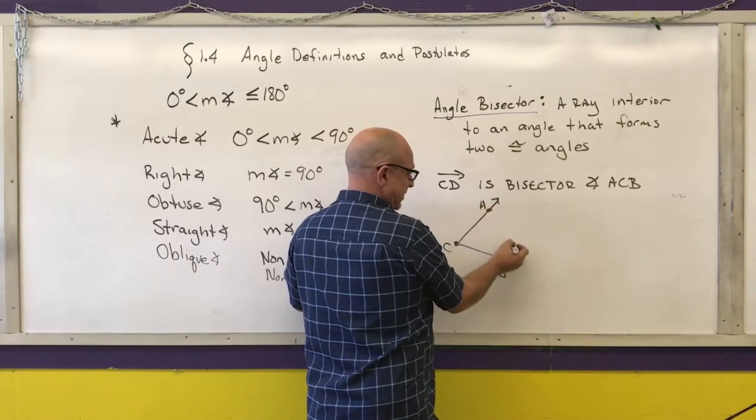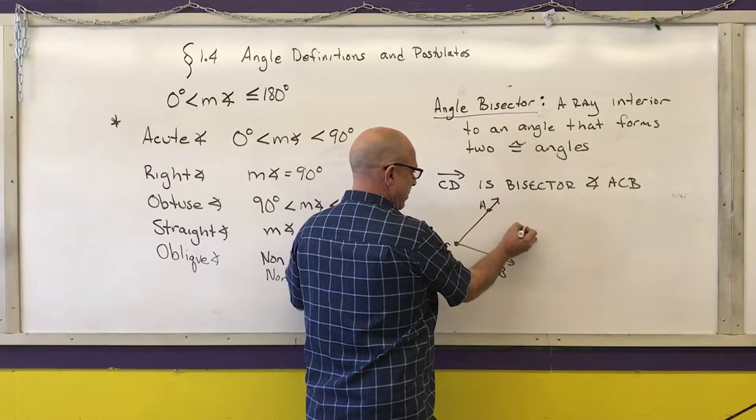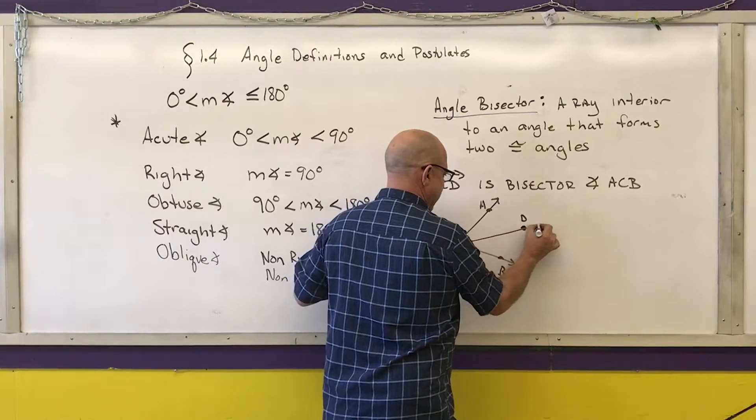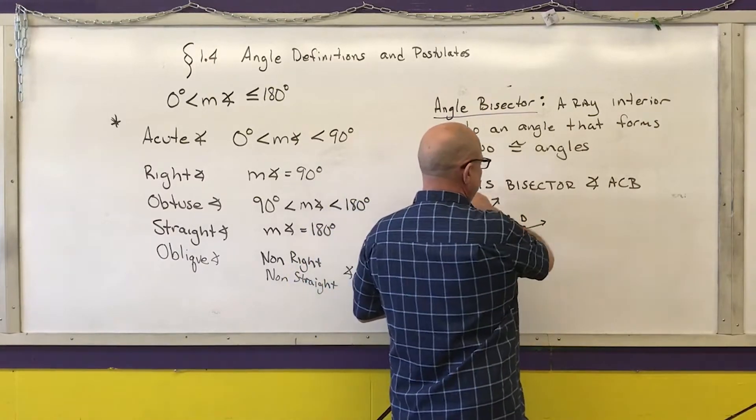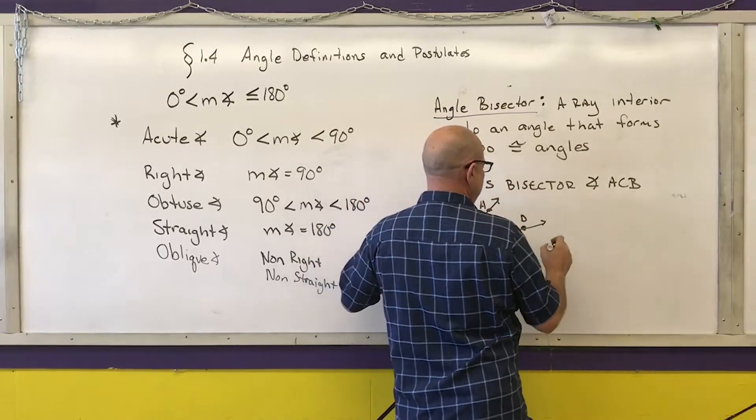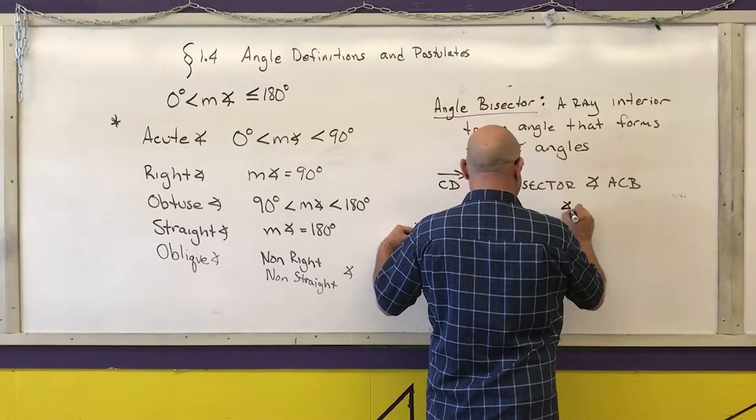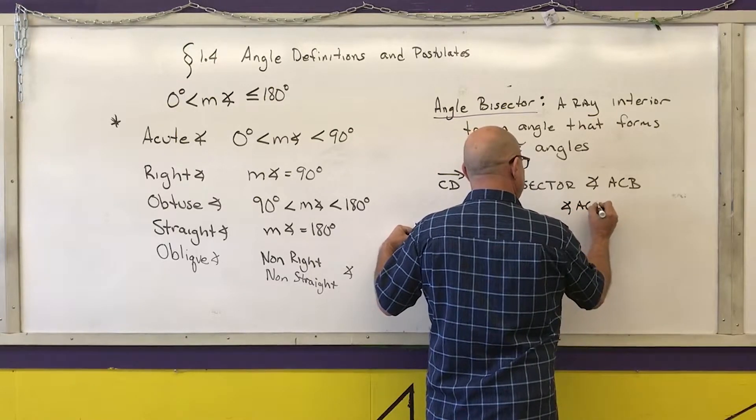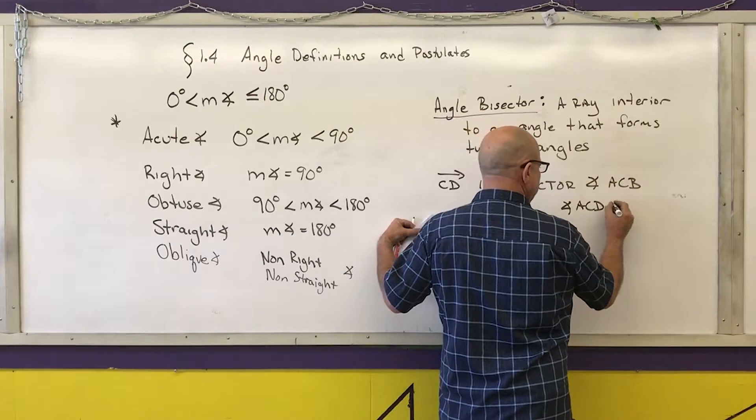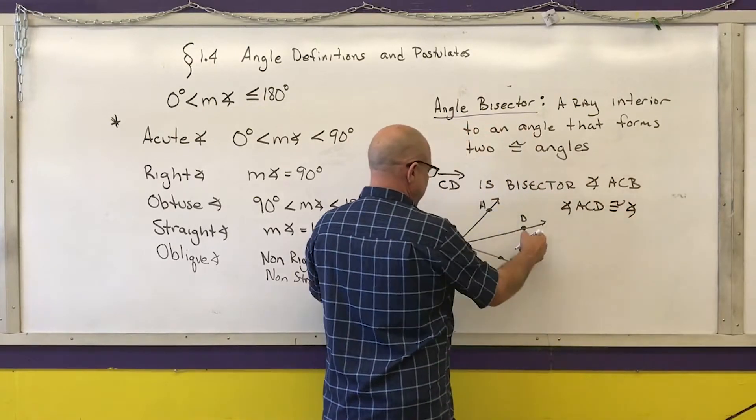D has to be inside this angle so it's on the interior. If I know that this is true, if ray CD is the bisector of angle ACB, then I know that angle ACD, that's this part right here, is congruent to angle DCB.